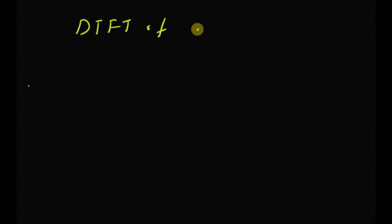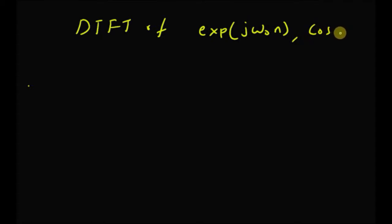Hello, welcome. In this session, let us look at the DTFT of a few basic functions. Specifically, we are going to look at the derivation of the DTFT of the complex exponential, that is e^(jω₀n), and then we look at the DTFTs of sinusoids, that is cos(ω₀n) and sin(ω₀n).